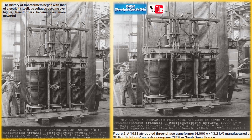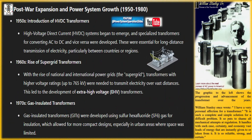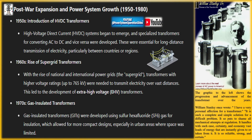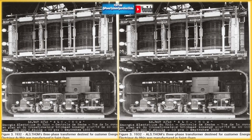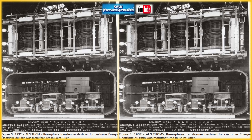The Westinghouse Electric Company, founded in 1886, saw George Westinghouse investing in AC power systems and acquiring patents for transformer designs. William Stanley, working for Westinghouse, designed and installed the first AC transmission system in the United States, lighting up the town center of Great Barrington, Massachusetts. His transformer design, using E-shaped steel laminations for the core, enhanced the efficiency of light bulbs and marked a significant step forward in AC power distribution.